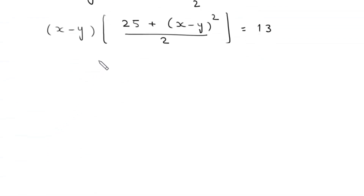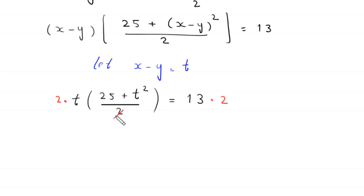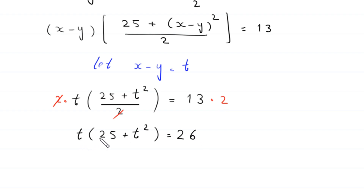Now we suppose that x minus y equals t, so this equation becomes t times (25 plus t squared) divided by 2 equals 13. Multiplying both sides by 2, the 2s cancel and we are left with t times (25 plus t squared) equals 26.